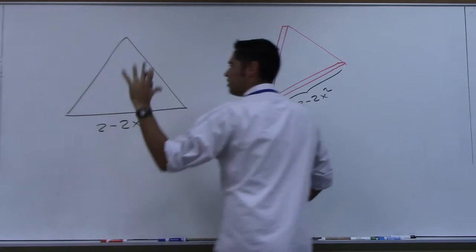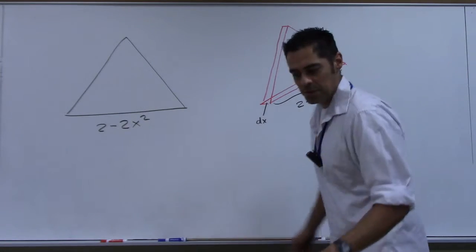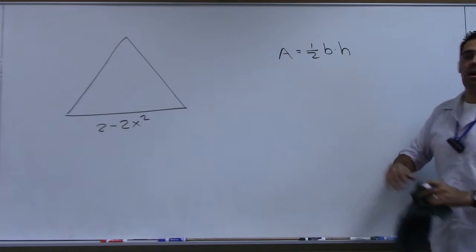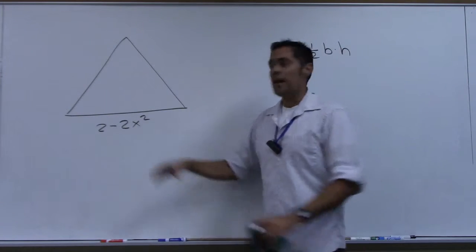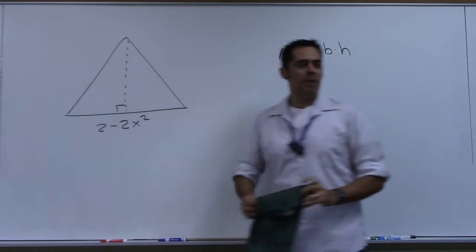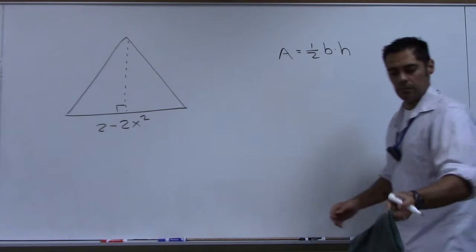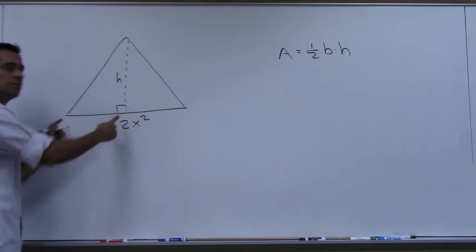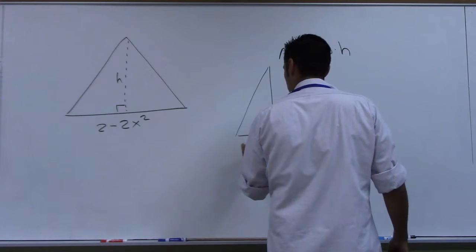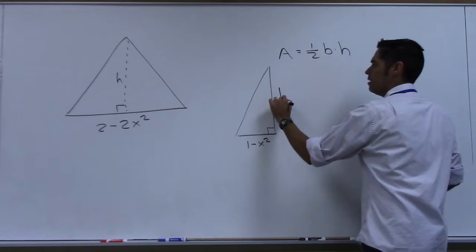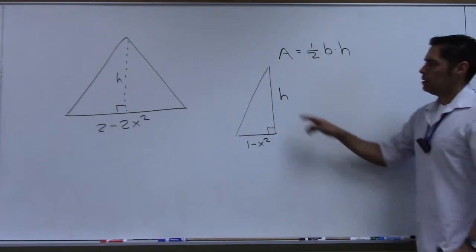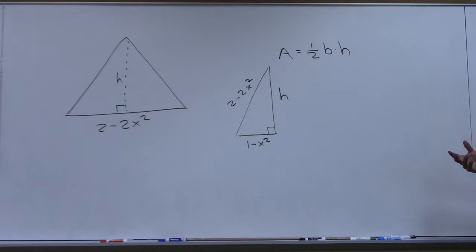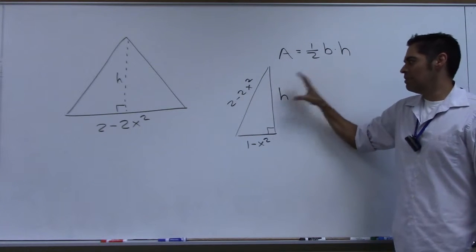This is 2 minus 2x squared. I'm looking at this straight on. Everyone in here said that the area of this was one half base times height. The base in this problem is 2 minus 2x squared. The height is right here. I want some ideas on how I'm going to figure out what that height is. Half of this would be from here to here — you all agree we could do that. So you're telling me to look at half of it. That's half of it, and this is h. Now what? 2 minus 2x squared is the hypotenuse — so that's 2 minus 2x squared. Pythagorean, right? This square plus this square equals this square.